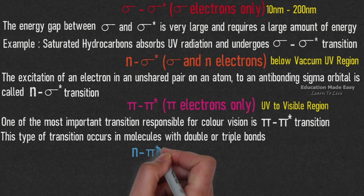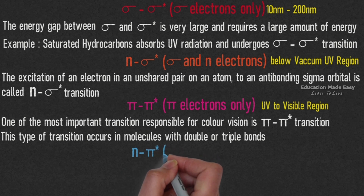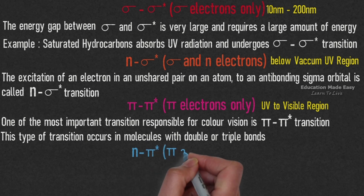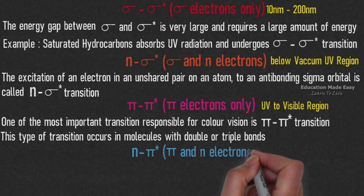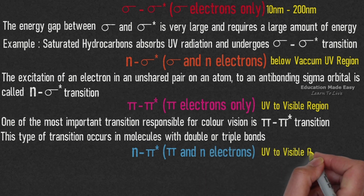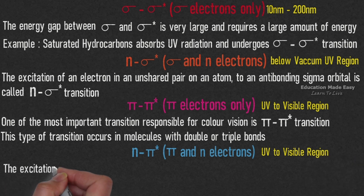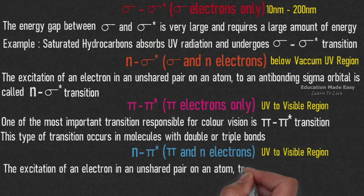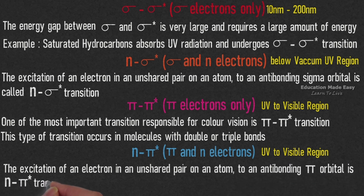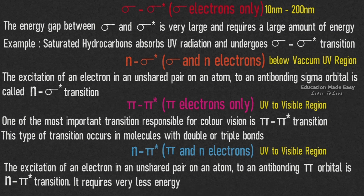The fourth type of electronic transition is n to pi star transition. In this type, pi and n electrons are involved and it happens in the region of UV to visible. The excitation of an electron in an unshared pair on an atom to an anti-bonding pi orbital is called n to pi star transition. It requires very less energy.